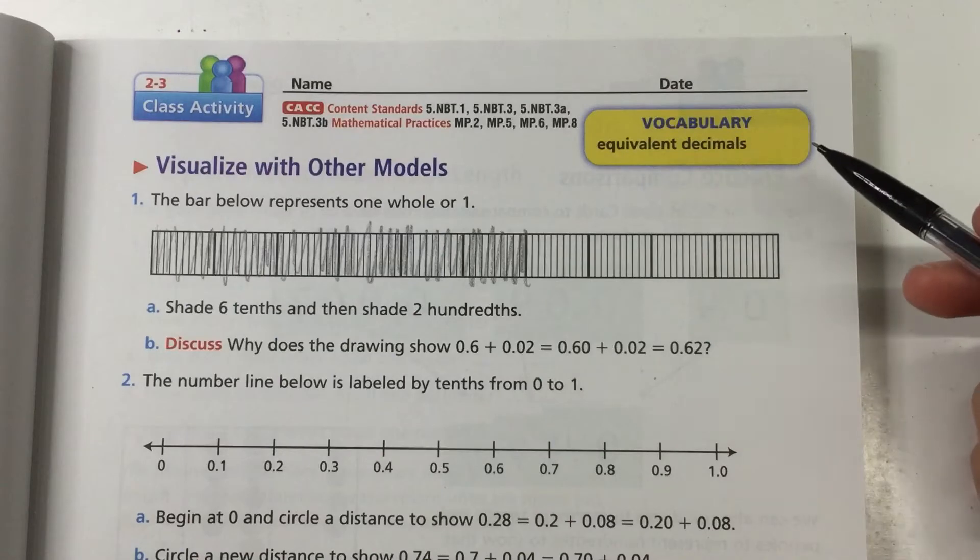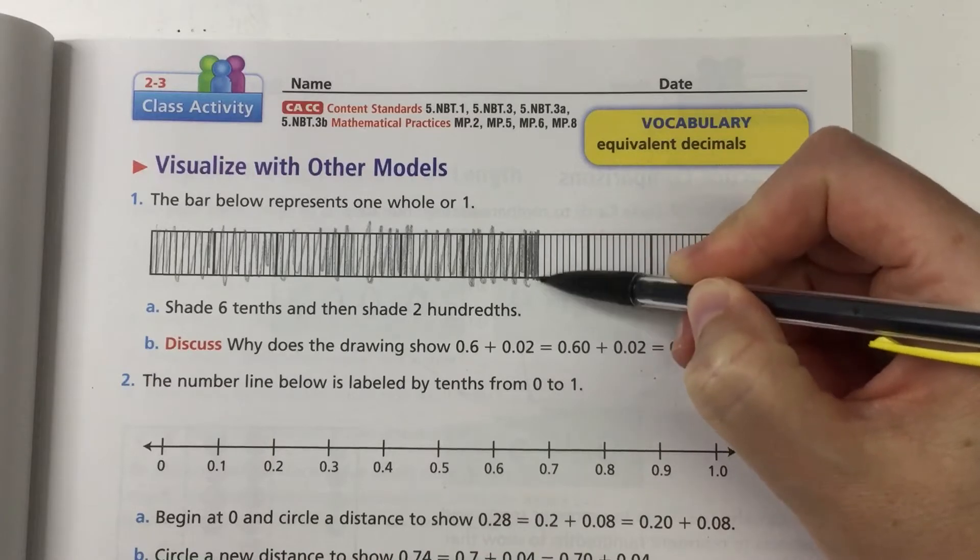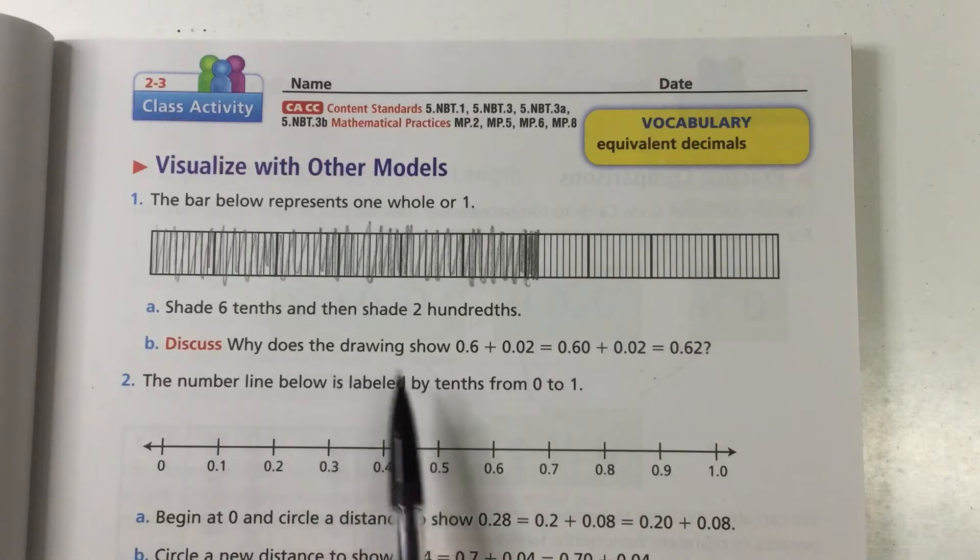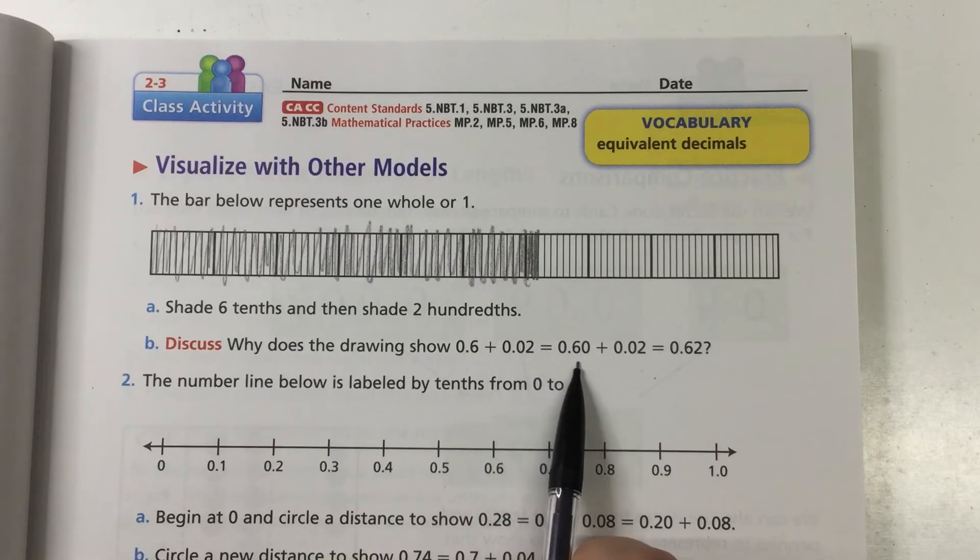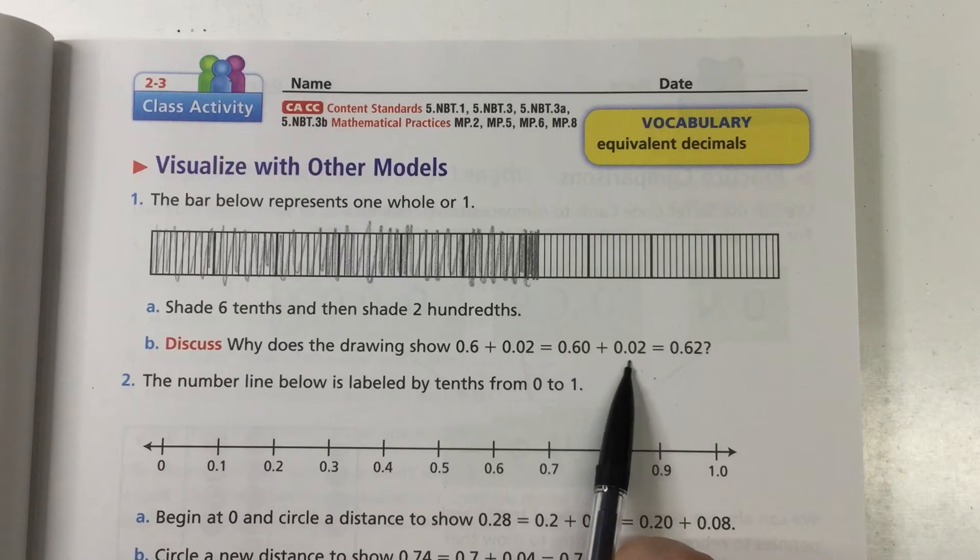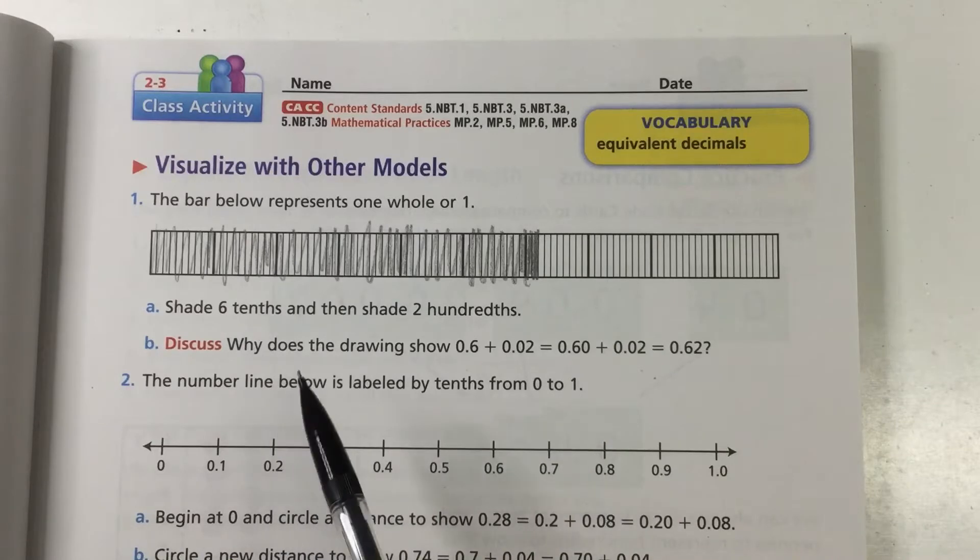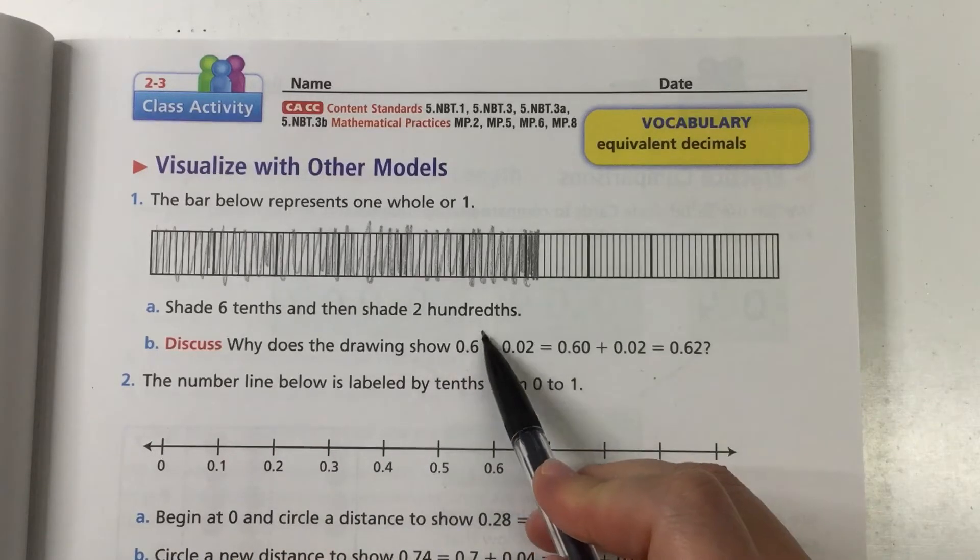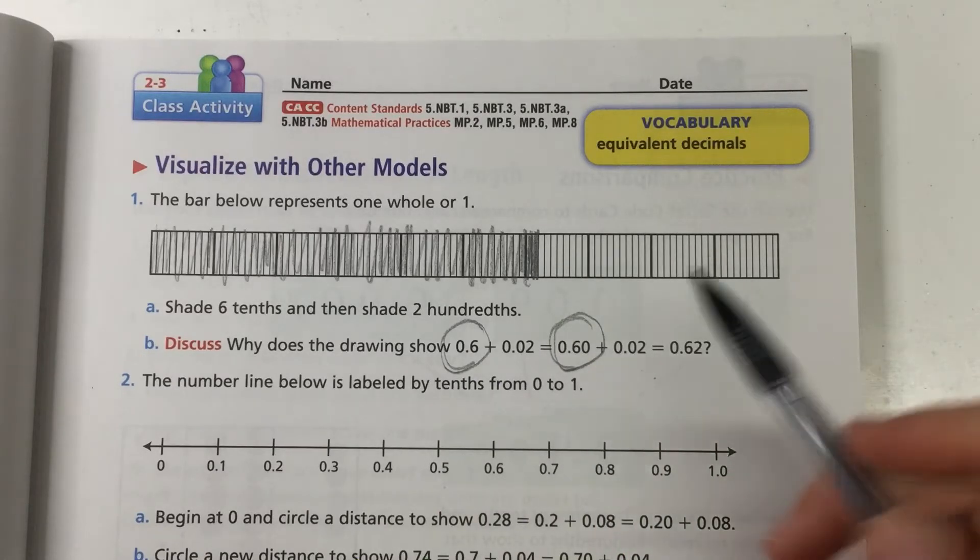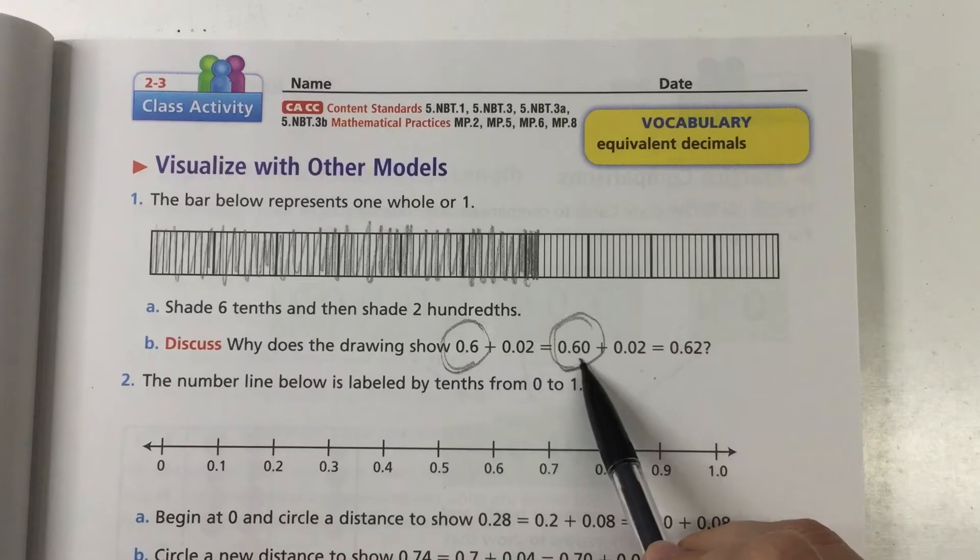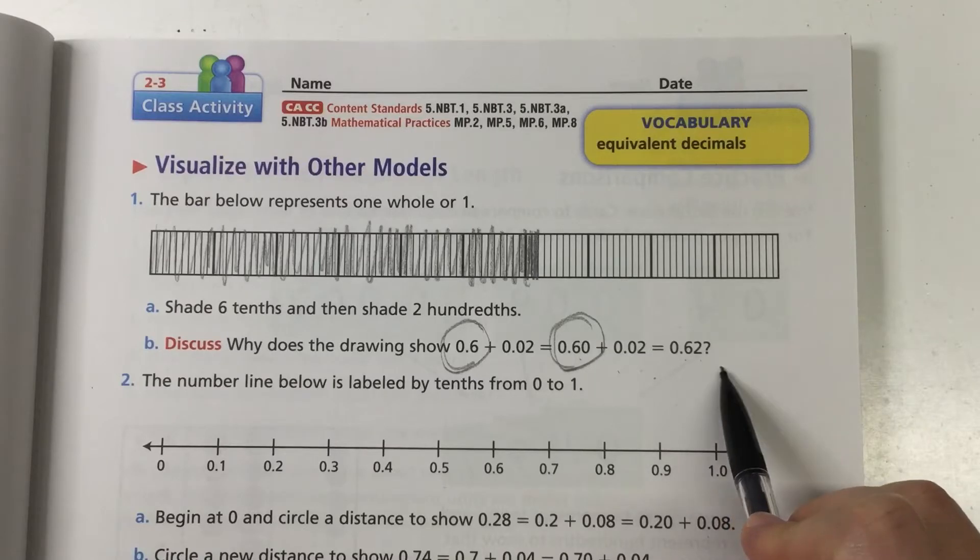Okay and then it says and then shade 2 hundredths so the smaller sections will be hundredths. Why does the drawing show 6 tenths plus 2 hundredths equals 60 hundredths plus 2 hundredths equals 62 hundredths. What this is asking us is can you represent the 6 tenths as 60 hundredths and yes we can right, that totally works so the 6 tenths can be represented as 60 hundredths and then just adding the 2 hundredths gets us to 62 hundredths.